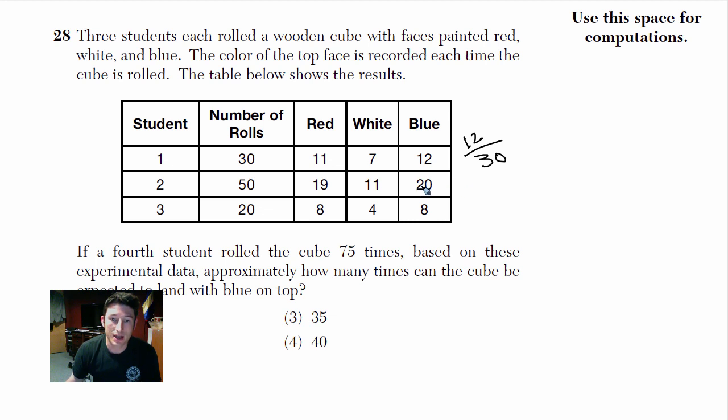Now, for the second guy, he got 20 out of 50. And for the third guy, he got 8 out of 20. Now, if this die is consistent, all those numbers should give us the same value. So what is 12 out of 30? It's 0.4. So you got a 40% chance of this happening. That's 0.4. What's 20 out of 50? That one you might be able to see right away. That's 0.4.